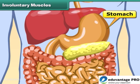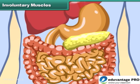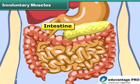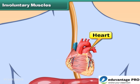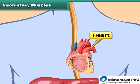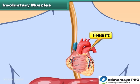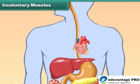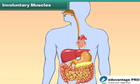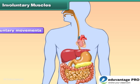The functions of the stomach, intestines, and heart go on in a fixed manner. The functioning of these organs is not dependent on our wishes. Such muscles are called involuntary muscles, and their movements are called involuntary movements.